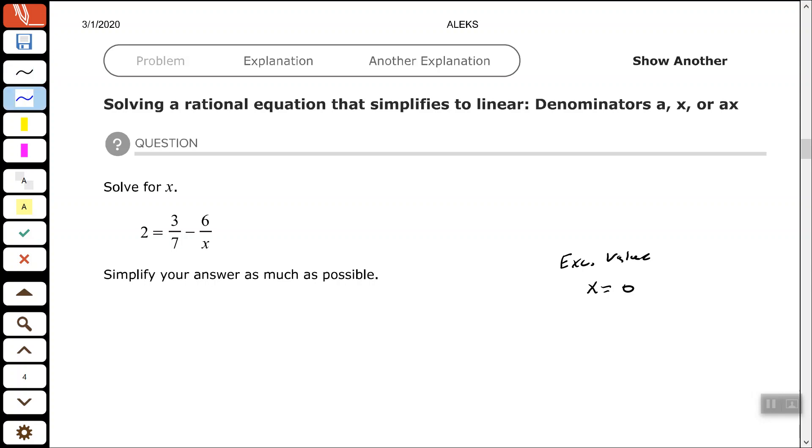Now, we want to find our least common multiple of our denominators. Our denominators are 7 and x. So the least common multiple of 7 and x of those factors will be 7x. So multiply both sides by 7x.